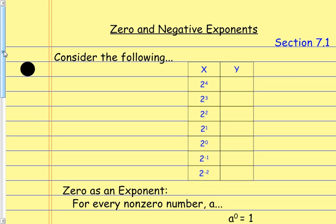If I do 2 to the fourth power, that's going to give me 16. If I do 2 to the third power, it's 8. 2 to the second power is 4. 2 to the first power is 2. And those are the ones we easily know how to do. But now let's watch the pattern — if I go from 16 to 8 to 4 to 2, what's happening is I'm dividing by 2 every time.